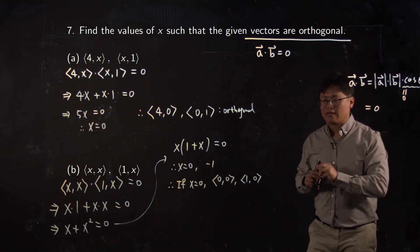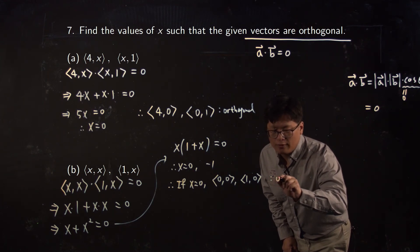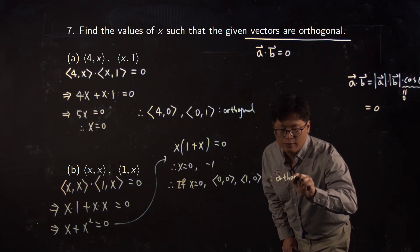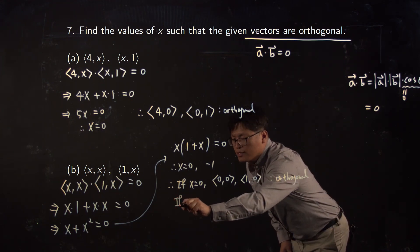which means just like you know, just pass through the surface, and that is always perpendicular with any vector on the surface. So they are orthogonal. And what about the second case?